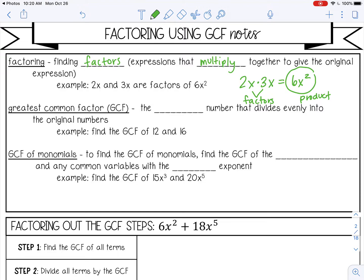The greatest common factor is the largest number that divides evenly into the original numbers. To find the GCF of 12 and 16, we want the largest number that divides evenly into both. Since both are even, let's try 4: 4 goes into 12 three times and into 16 four times, so that works. Trying 6 or 8 doesn't work for both, so the GCF of 12 and 16 is 4.